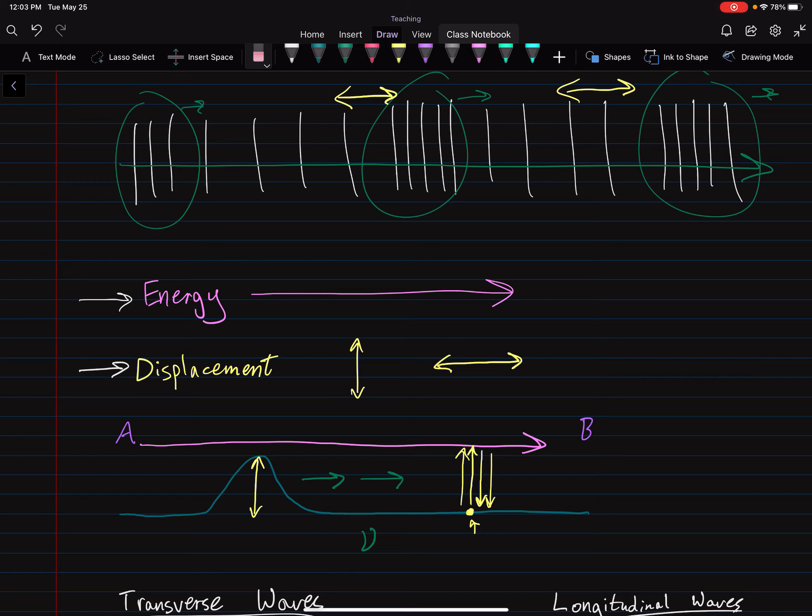So we started with the displacement. We found the wave function, then we used that, took some derivatives, found the wave equation, and we have everything we ever wanted to know about the position, velocity, acceleration of the particles.